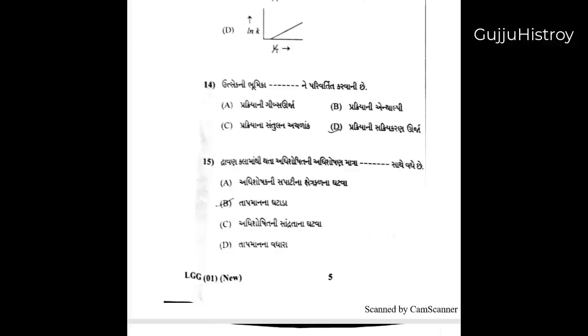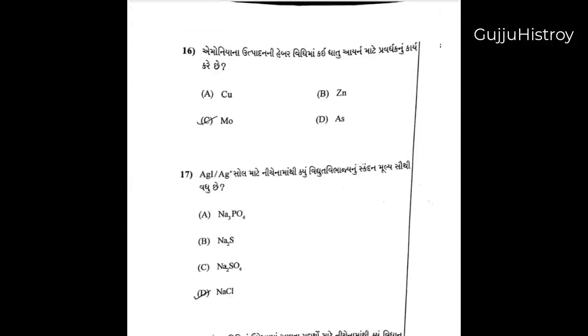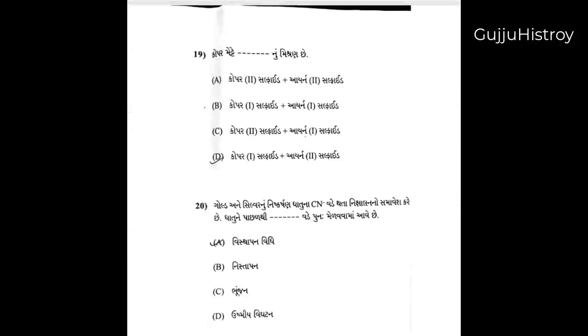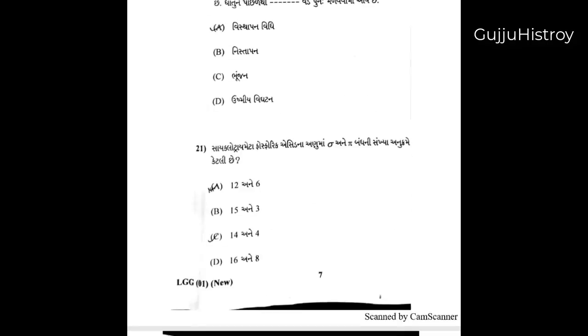દ્રાવણ કળામાંથી થતા અધિશોષણ માત્રા ખાળ જગ્યા સાથે હોય છે, તાપ-માનના ઘટાડા સાથે. ફ્લોટ-ફ્લાવ વિધિમાં, ઉમેરવામાં આવતા પદાર્થો માટે - ટ્રાઈ-મેટા ફોસ્ફોરિક એસિડ - સિગ્માં અને પાઈ બંધની સંખ્યા અનુક્રમે: વિકલ્પ B સાચો છે, A અને C ખોટા; 15 અને 3 જવાબ.